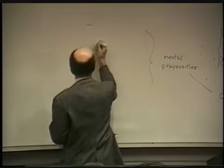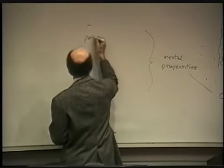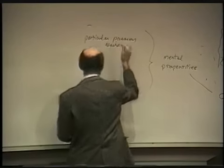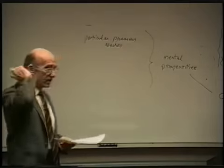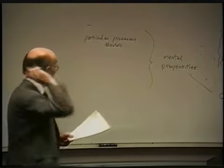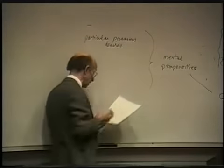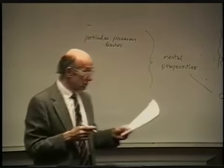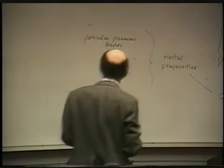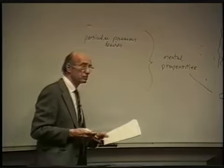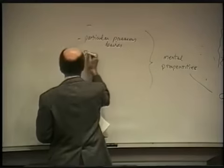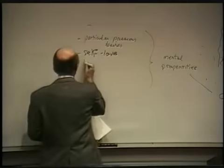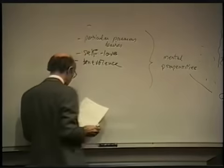These four kinds of propensity are, first of all, particular passions, where he seems to be speaking particularly of desires — desires for satisfaction. So the feelings, the emotions, the desires associated with hunger, with sex, with anger — particular desires for particular objects. A propensity as well for self-love, that's the self-interest. A propensity for benevolence, loving others.